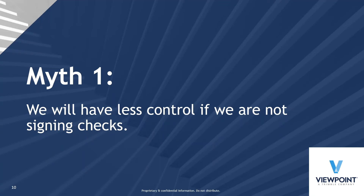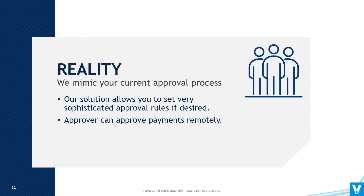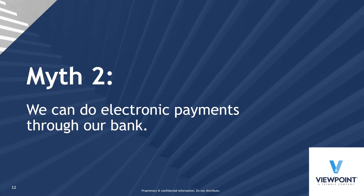Myth number one: 'We will have less control if we are not signing checks.' This is a common question — are we giving up control by moving to electronic payments? The reality is that we mimic your current approval process to give you at least the same level of control. Our solution handles very sophisticated approval rules and thresholds. For example: payments under $1,000 need no approval; above $1,000 need one approver; above $10,000 need two; above $50,000 can only be approved by the CFO. Whatever rules you have now, we can mimic them. Additionally, approvers no longer have to be in the office — they can securely log in remotely, which is very helpful in construction.